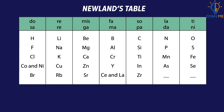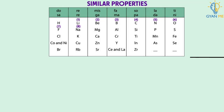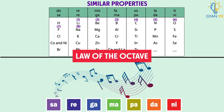Newlands noted that the eighth element from lithium — which is sodium — has the same properties. Also, the properties of magnesium, the eighth element after beryllium, are similar, and thus he placed it below beryllium. He generalized that the properties of the eighth element after every seventh element are similar to the first element. Newlands compared his law to the octaves of music and called it the Law of Octaves — known today as Newlands' Octave Rule.